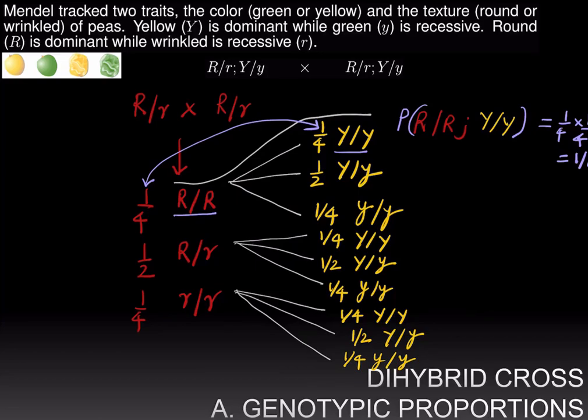Let's do another example. What is the frequency of the genotype where the first trait, the texture round versus wrinkled, is heterozygous, and the second trait, which is the color, is homozygous for the dominant allele big Y big Y? And all we need to do is to multiply the probabilities of getting a heterozygous individual for the texture trait and a homozygous individual for the dominant allele, the big Y allele, and that's half times a quarter. And so the probability of getting an individual who is big R over little r and big Y over big Y is one-eighth.